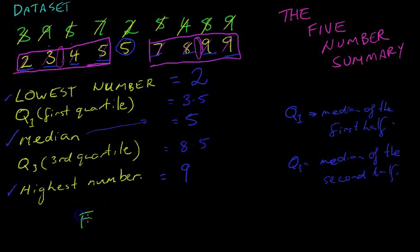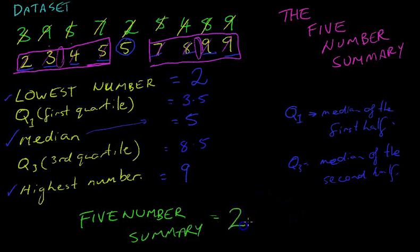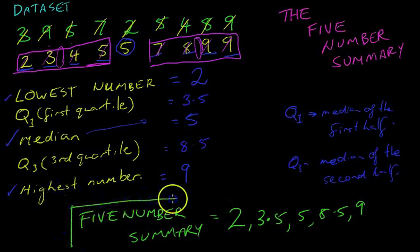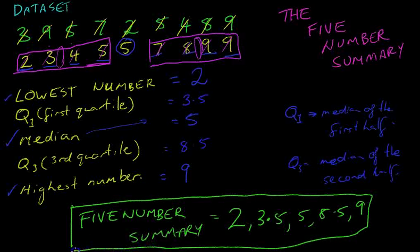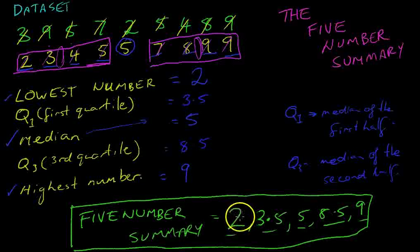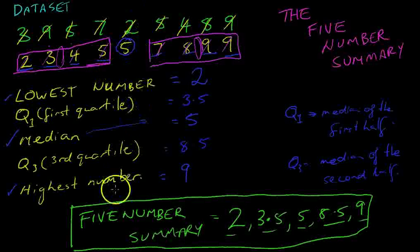Okay, that's really the end of it. Let me just summarise. Our five-number summary is: 2, 3.5, 5, 8.5, 9. What we've done is take our data set and summarise it with five numbers — lowest number, highest number, median, Q1, and Q3. In a future video we'll look at a way to use those five numbers to create a graph that represents this data set a little bit better.